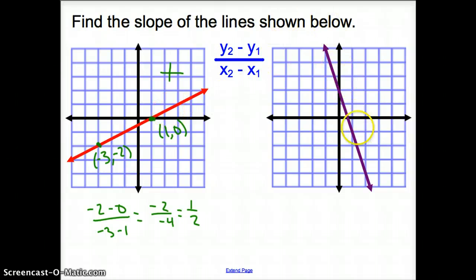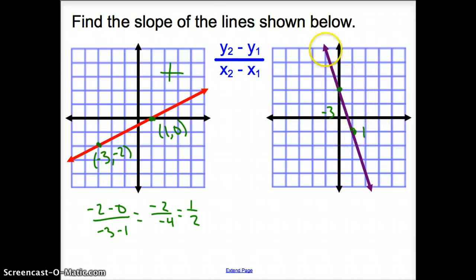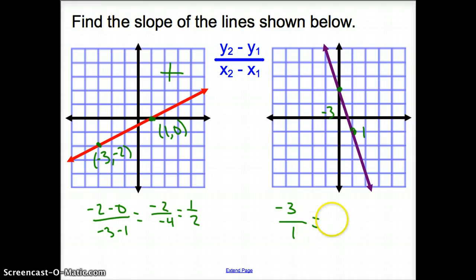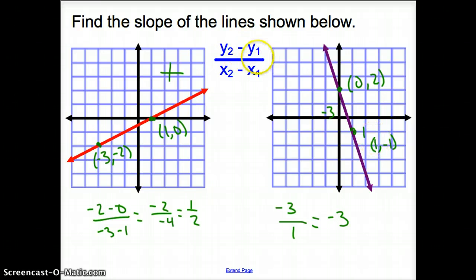Another way to handle a problem like this is to find points and then count. We count up and down first: we go down 1, 2, 3 — so we went down 3. Then we went to the right 1. Since we're going down from left to right, I know it has to be a negative slope. That gives us negative 3 over 1, which simplifies to negative 3. Or you can label the points — this one was (0, 2) and this one was (1, negative 1) — and plug them into the formula.